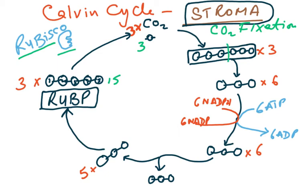We again have 18 carbons' worth of molecules — 15 plus 3 gives 18. This splits into three-carbon units, giving six three-carbon molecules, which is again 18 carbons. These are abbreviated as GP (glycerate phosphate). GP is then converted to TP (triose phosphate).